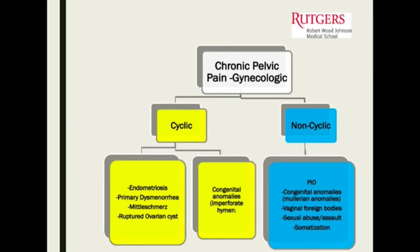Some of the non-cyclic etiologies are pelvic inflammatory disease, other congenital anomalies, vaginal foreign bodies, and sometimes patients come in who are being abused or assaulted — and maybe chronic pelvic pain is their way of reaching out for help. This comes back to making sure the history you take is complete, not just medically, but in the social component too.